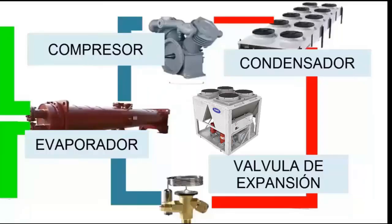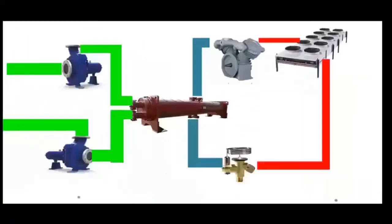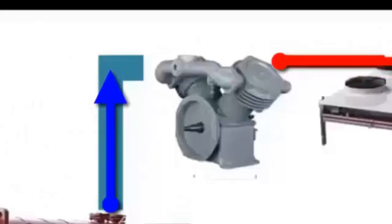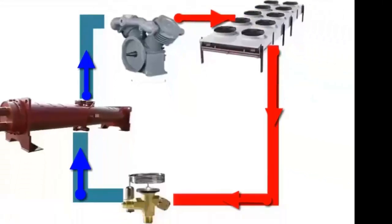For example, the compressor is responsible for moving the refrigerant through the circuit, increasing its pressure and temperature so it can be efficiently condensed in the next step of the process. This pressure increase is crucial for the heat transfer that occurs in the condenser.